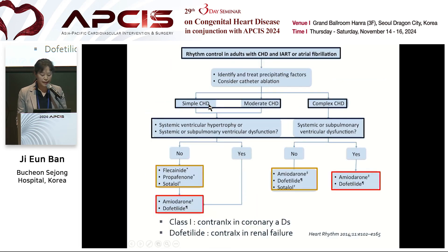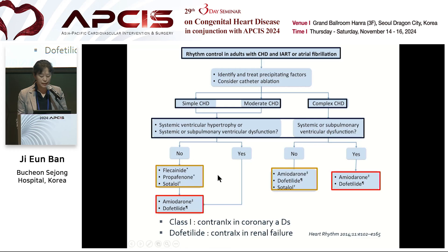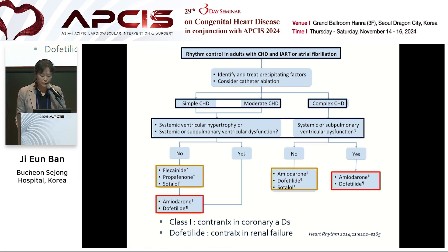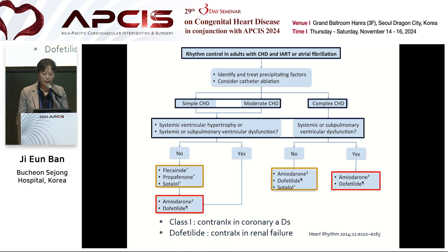This algorithm shows rhythm control. According to disease complexity, use of antiarrhythmic drugs differs. In simple and moderate congenital heart disease, class 1c and class 3 drugs can be used. In complex types, class 3 is recommended. Amiodarone is the most effective antiarrhythmic drug for AF in the setting of heart failure and congenital heart disease. However, long-term treatment is limited in young adults due to drug toxicity, especially in women, patients with unrepaired cyanotic lesions, and Fontan patients.